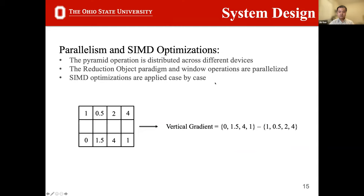There are three levels of parallelism in the implementation. The pyramid operation is distributed across different devices. On each device, the reduction object paradigm and window operations are mapped to different cores using OpenMP. At the lowest level, code with regular access patterns is further optimized with SIMD instructions — for example, the calculation of vertical and horizontal gradients in the HOG feature extraction algorithm is easily SIMDized.